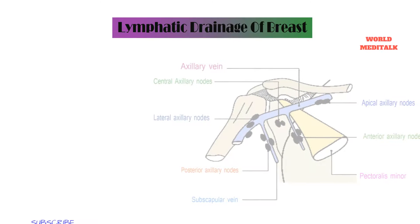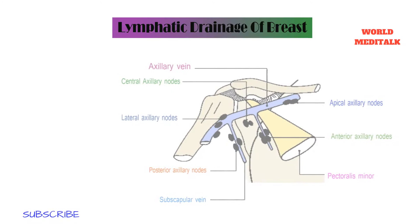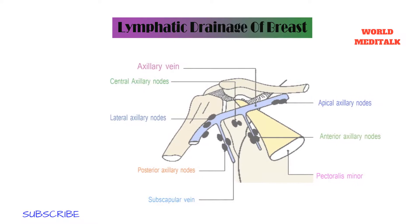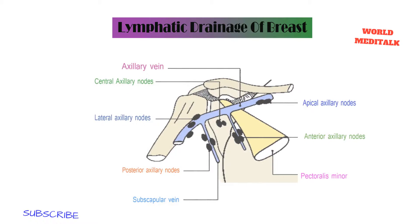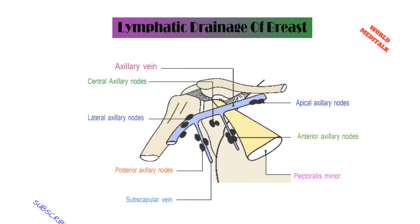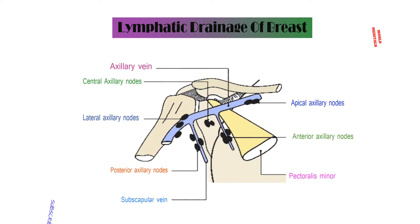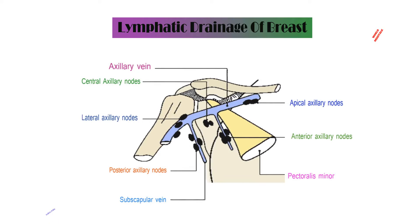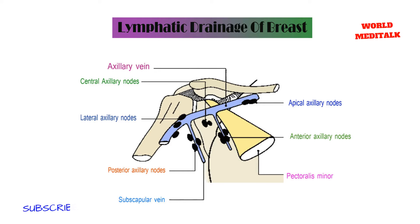Quick recap: The axillary lymph nodes are arranged in five sets, totaling around 20 to 30. The anterior group lies at the lower border of the pectoralis minor muscle, close to the lateral thoracic vessel. The posterior group lies along the lower margin and posterior wall along the subscapular vessels. The lateral group lies posterior and medial to the axillary vein. The central group lies beneath the pectoralis minor muscle within the fat of the axilla. The apical group lies behind and above the pectoralis minor muscle, medial to the axillary vein.